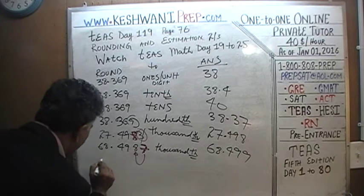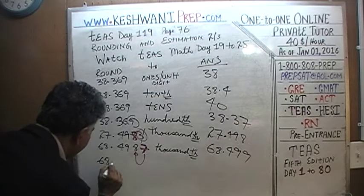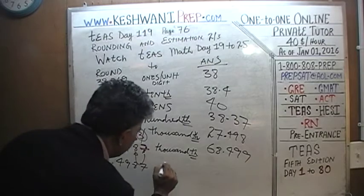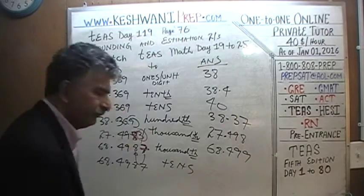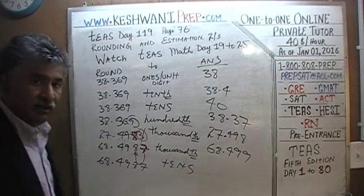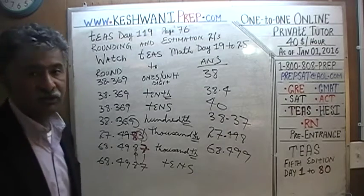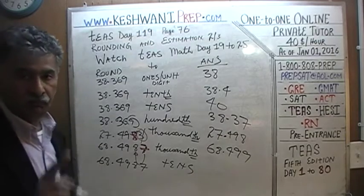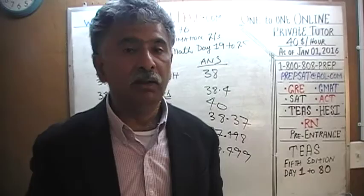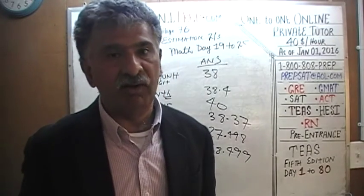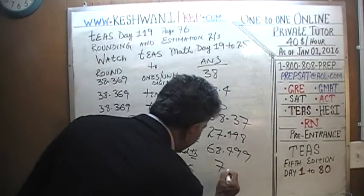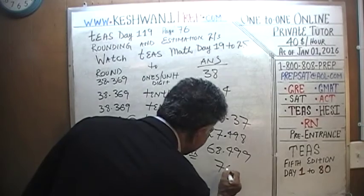What if you were asked to round 68.4987 to the nearest tens? 68 is closer to 70 than to 60, because it is equal to or more than 65. Rounded to the nearest tens, it becomes 70.